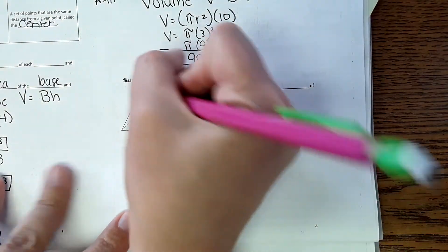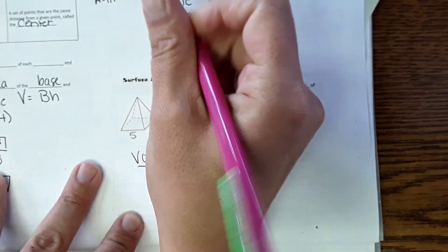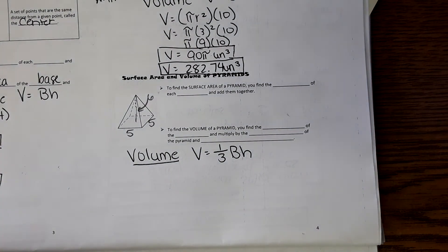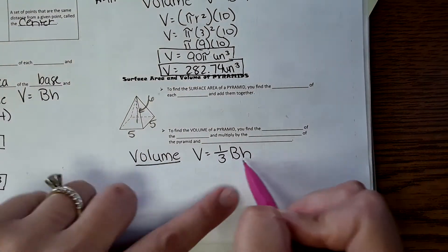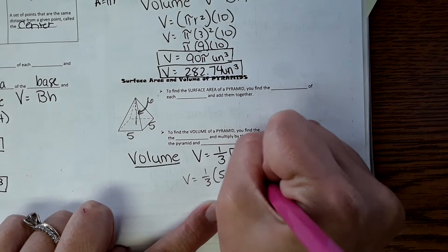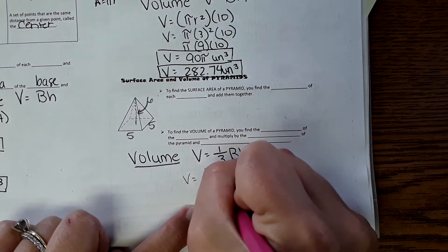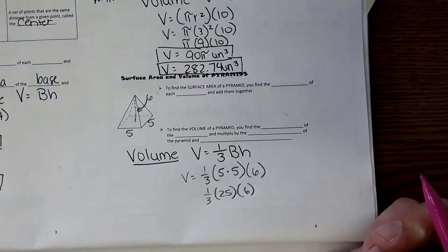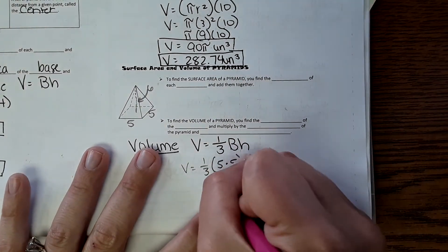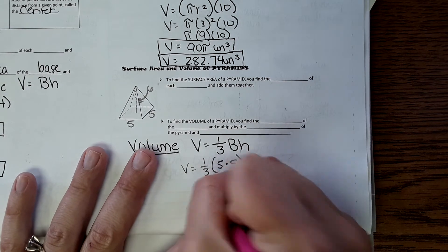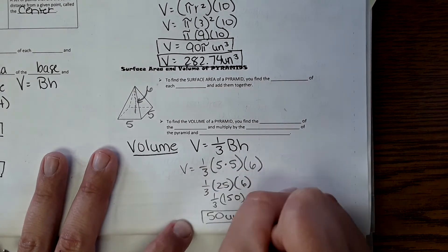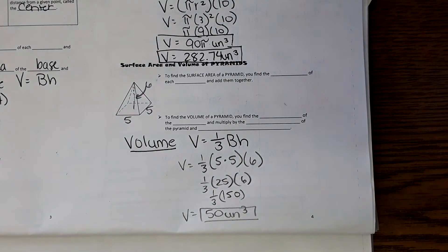For a pyramid with dimensions 5×5 base and height 6: the base is a square, so Volume = ⅓ × 5 × 5 × 6. Five times five is 25, times six is 150, divided by three is 50 units cubed. There's no pi because we aren't working with circles.